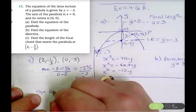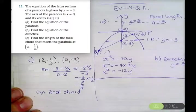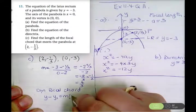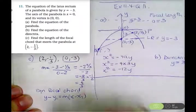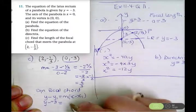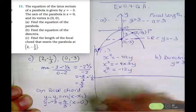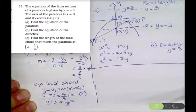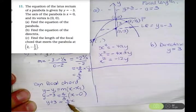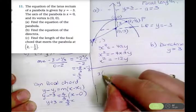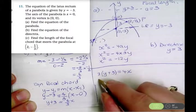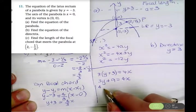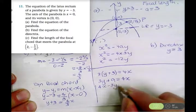For the equation of the focal chord, using the point-gradient formula y minus y1 equals m times (x minus x1), I'll use the point (0, negative 3): y minus negative 3 equals 4 over 3 times (x minus 0). Simplifying: y plus 3 equals 4 over 3 x. Multiplying both sides by 3: 3y plus 9 equals 4x. So the equation of the focal chord is 4x minus 3y minus 9 equals 0.